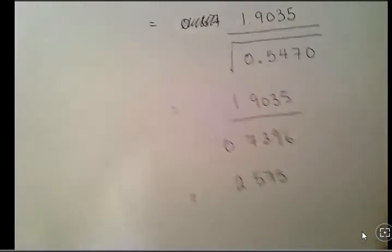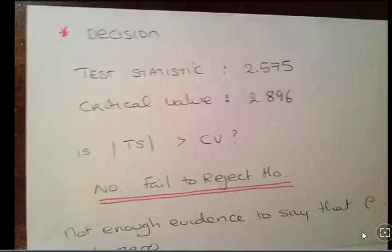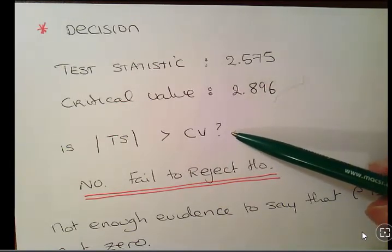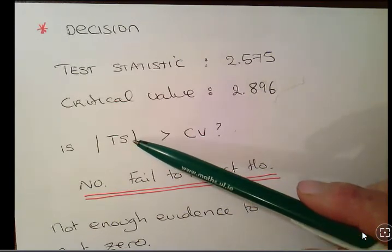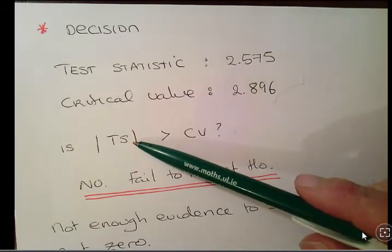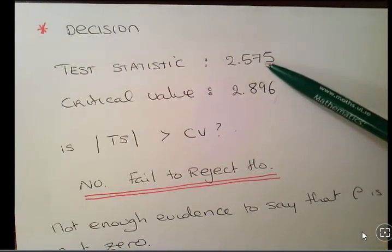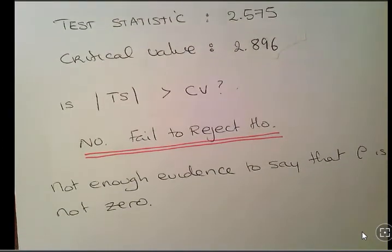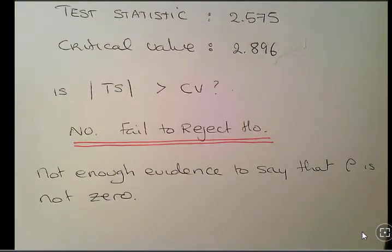What we're going to do now is employ the decision rule. The test statistic is 2.575. The critical value is 2.896. The decision rule is: is the absolute value of the test statistic greater than the critical value? Because we could get negative test statistics, the absolute value sidesteps that problem. Comparing these two numbers: is the absolute value of the test statistic greater than the critical value? No, not in this instance. So we fail to reject the null hypothesis. Not enough evidence to say that rho is not 0. There's a multitude of ways that you can interpret that output, but that will do.